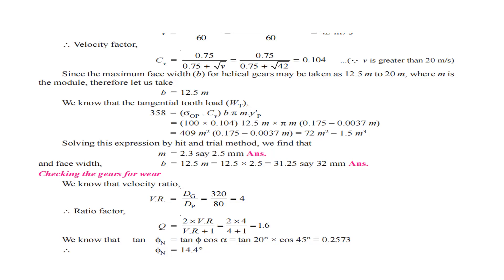The velocity ratio is equal to 4. With the diameter of the gear and the diameter of the pinion given, the velocity ratio is 4. We have already calculated: 320 divided by 80 equals 4.